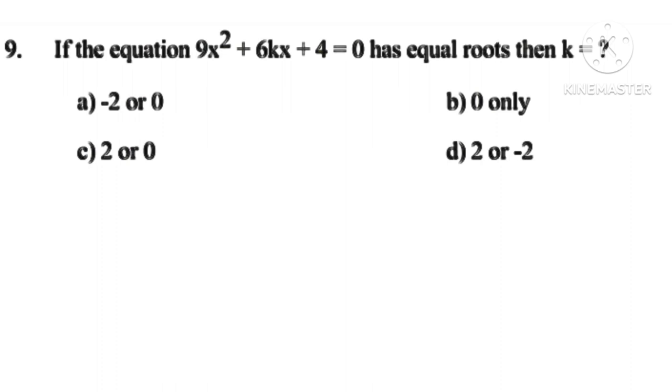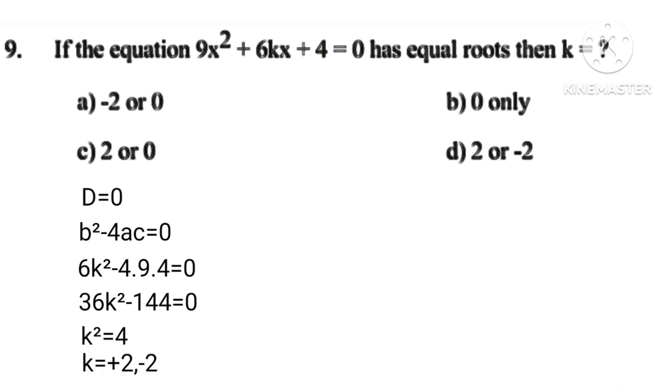For equal roots, D equals 0. Implies that B squared minus 4AC equals 0. 6K squared minus 4 times 9 times 4 equals 0. 36K squared minus 144 equals 0. K squared equals 4. K equals plus 2, minus 2.